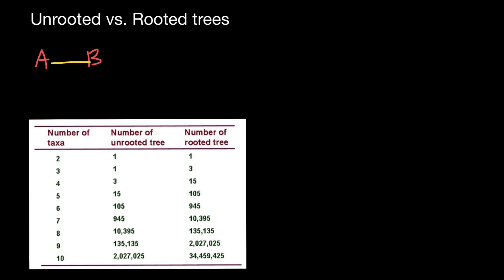What if we add a root here? Let's say this is going to be a root. In this case, our phylogenetic tree is going to look as follows: we are going to have species A here and B here, and here is going to be our root. So with two species A and B, we have only one unrooted variant and only one rooted variant.